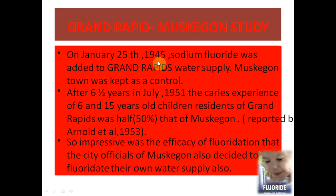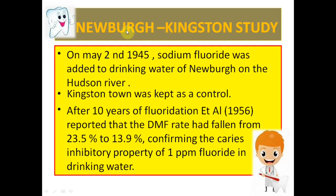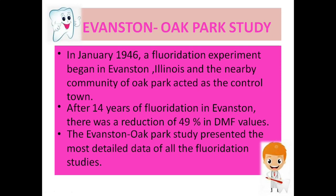The second study, Newburgh–Kingston, started in 1945; Newburgh was the intervention and Kingston was the control. After 10 years, the reduction was 23.5 to 13.9 percent. The next study, Evanston–Oak Park, started in 1946; Evanston in Illinois was the intervention and the nearby community of Oak Park acted as the control. After 14 years of fluoridation, the reduction was 49 percent.